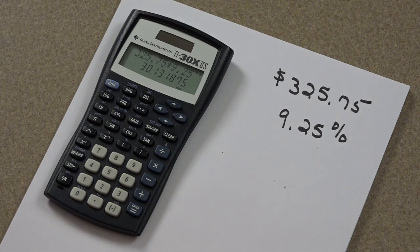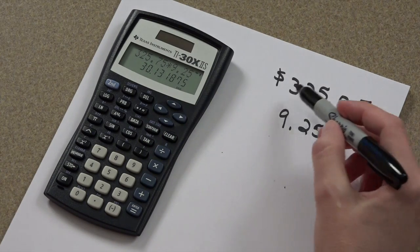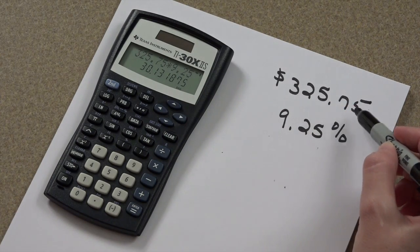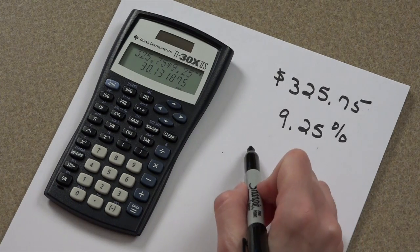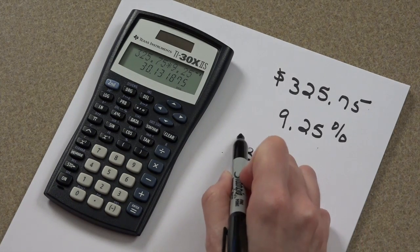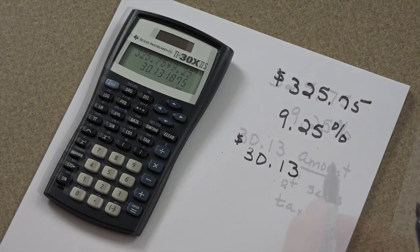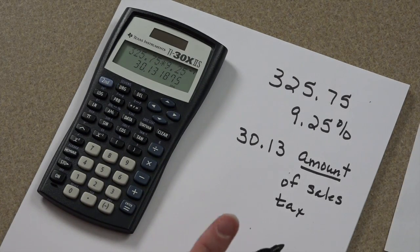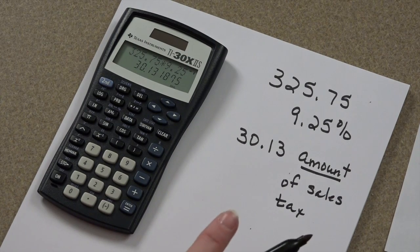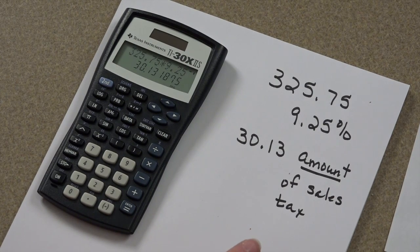Press equal and the amount of sales tax on this $325.75 item is about $30.13.